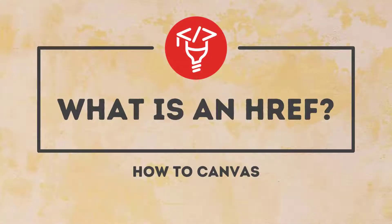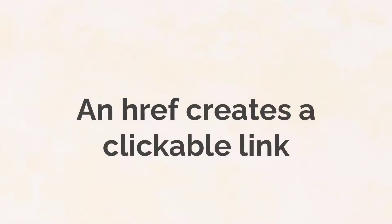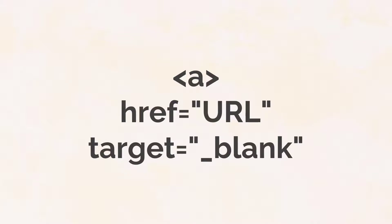So what is an href in Canvas? An href creates a clickable link — some kind of interactive component where students click on text or a picture, and based on that interaction it takes them to a different place. The components are: you need an anchor tag in the HTML, then you specify where the href goes with href equals and a URL. That URL can be a website, a downloadable link, or a place within the Canvas page. Optionally, within the anchor tag, if you put target equals underscore blank in quotation marks, that specifies that clicking the link will pop open a new tab.